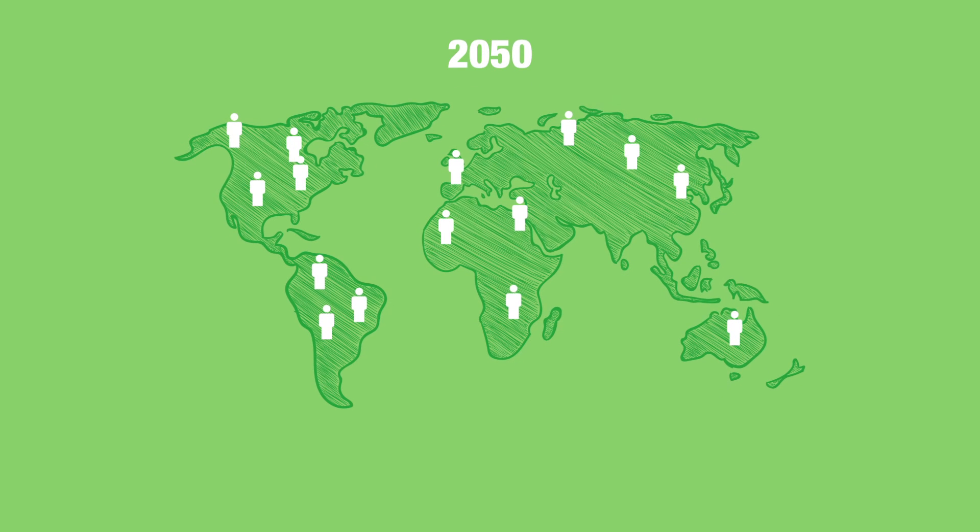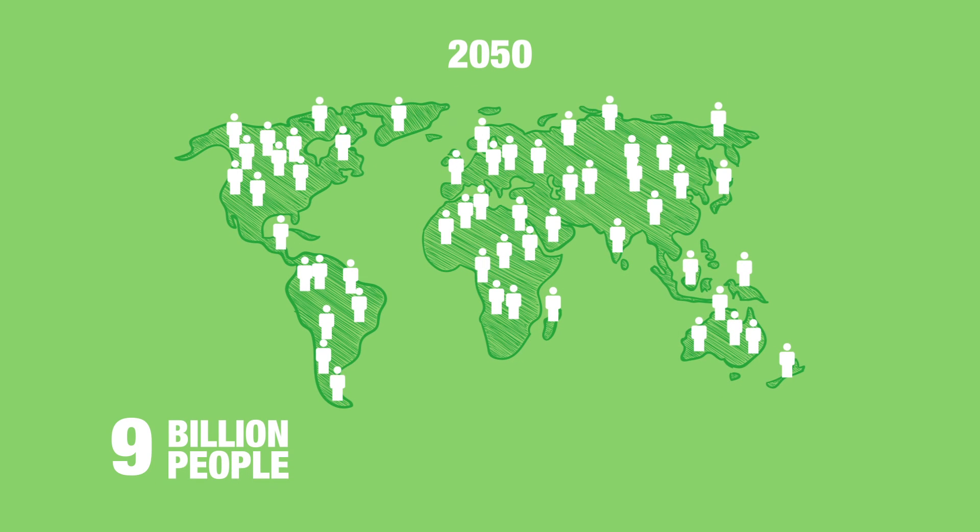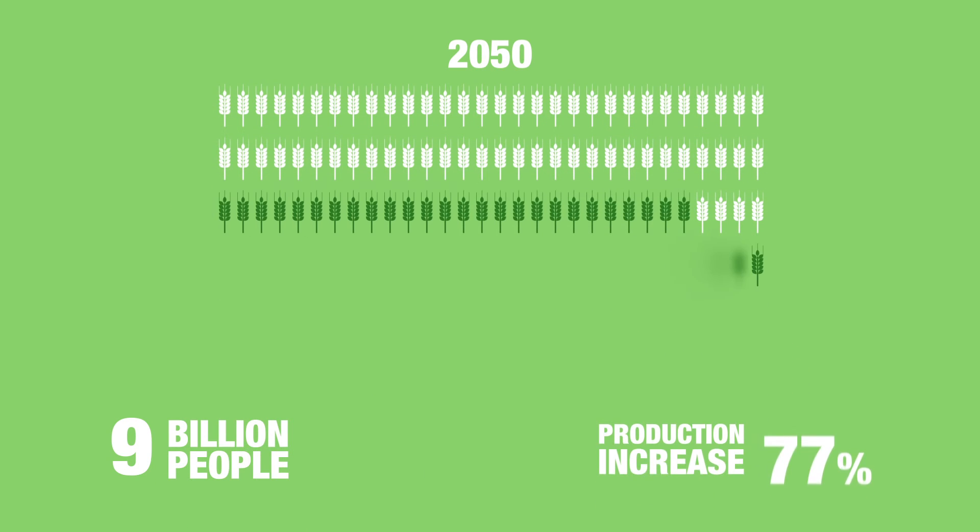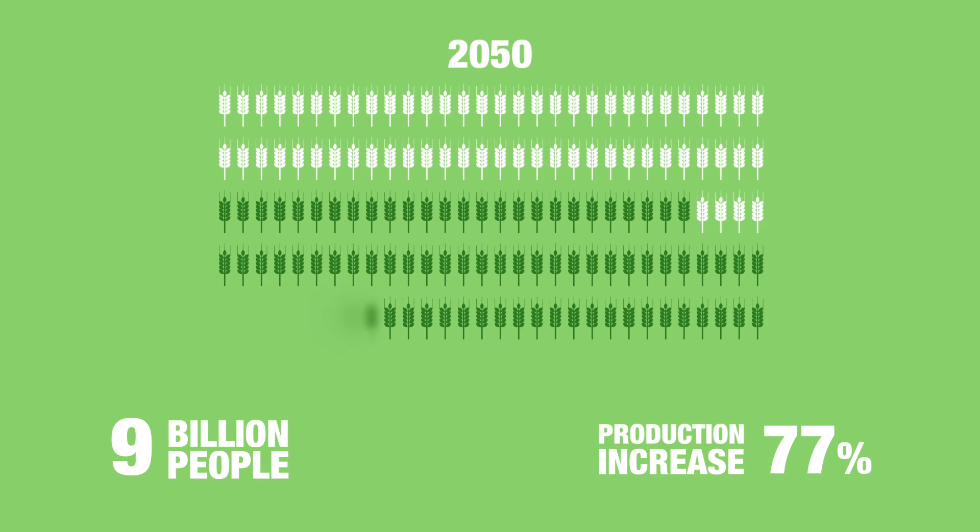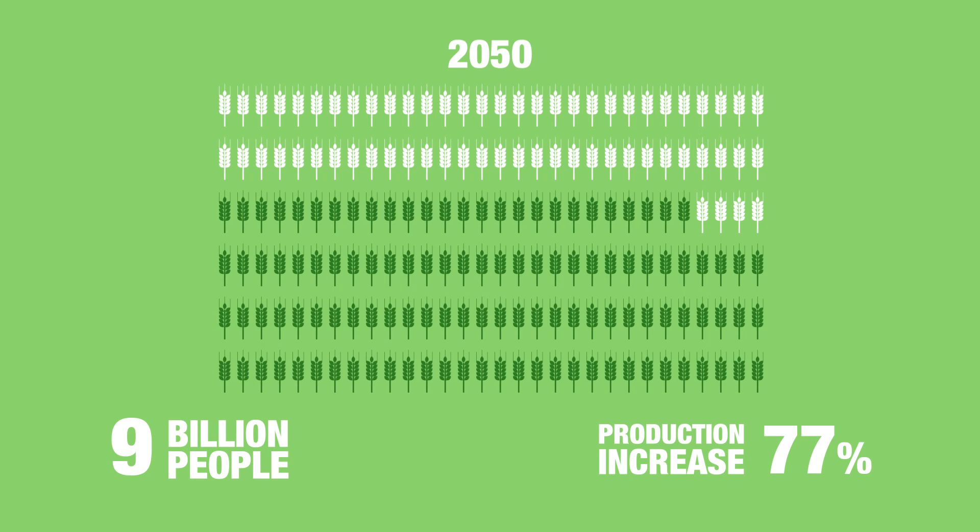By 2050, there will be 9 billion people on our planet. A 77% increase in global agricultural production will be necessary by that time to respond to the food demand.